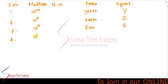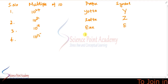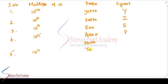10 power 15 is peta or penta, symbol capital P. Next, 10 power 12 is tera, symbol capital T. Then 10 power 9 is giga, symbol capital G.